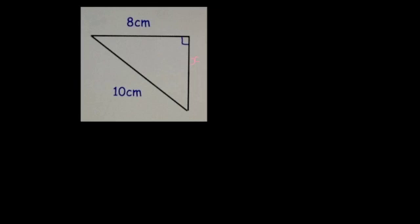On a Pythagoras question the first thing you should do is label the sides A, B and C. A, in this case the smaller side, is going to be 8.